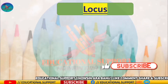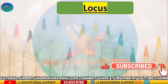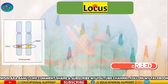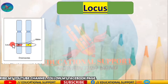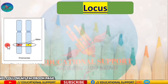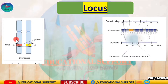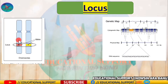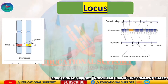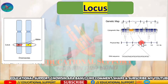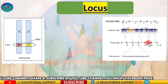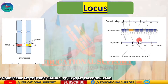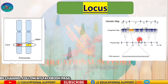The term locus refers to the location of a gene or particular nucleotide sequence on a chromosome. The locus of a particular gene is determined by gene mapping. All loci in a particular gene are called the genetic map of the gene. The components of the label of a locus may contain the number of the chromosome, the chromosome arm to which the locus belongs, and the number of nearby bands of the chromosome.